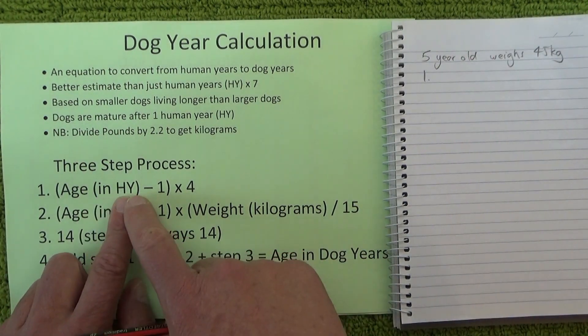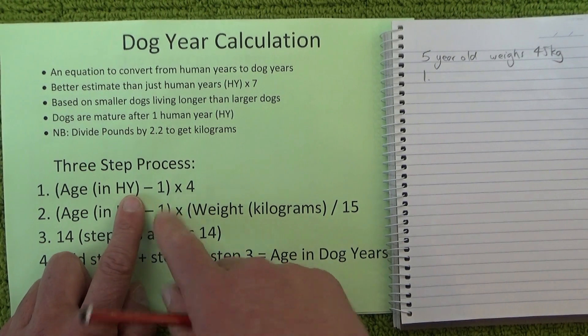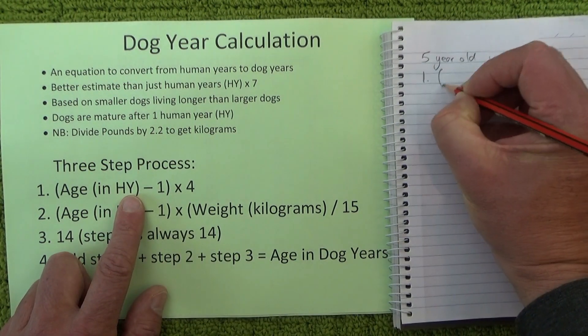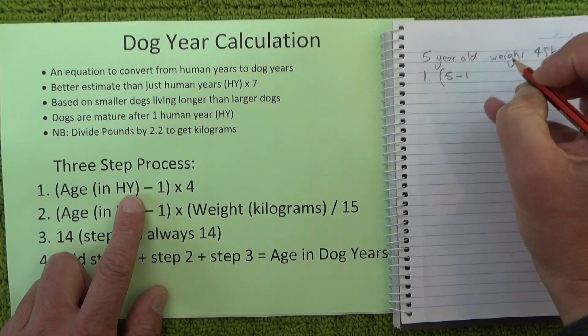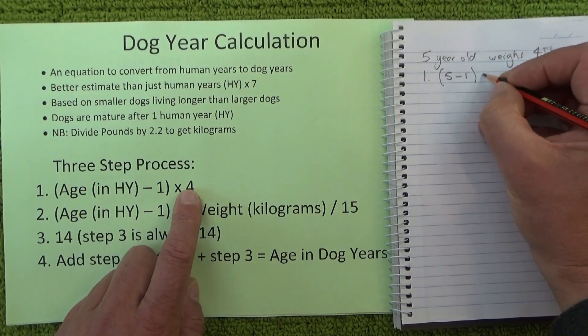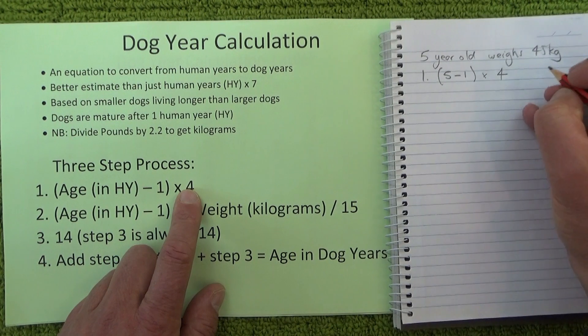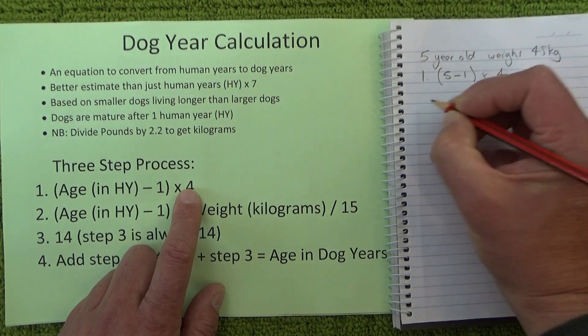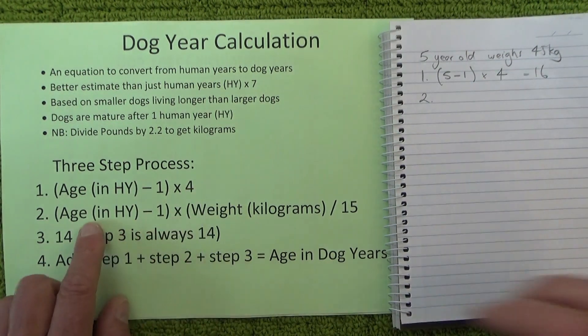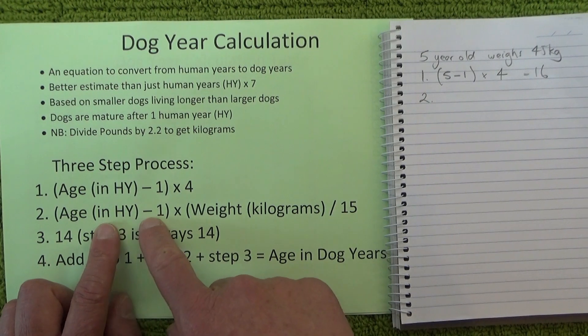We go to step one, which is age in years minus one. So it's five minus one, and we multiply that by four. Five minus one is four, times four equals sixteen.